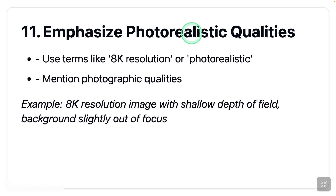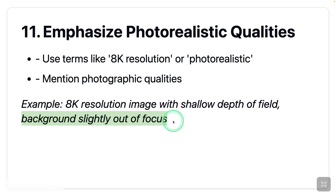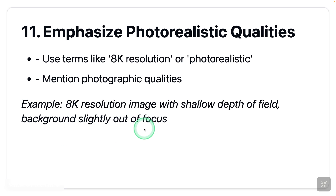Next: emphasize photorealistic qualities. Use terms like '8K resolution' or 'photorealistic' and mention photographic qualities. Here is an example: '8K resolution image with shallow depth of field, background slightly out of focus.' We already mentioned blurred background — this is just to re-emphasize. Copying the prompt, and here is the output.